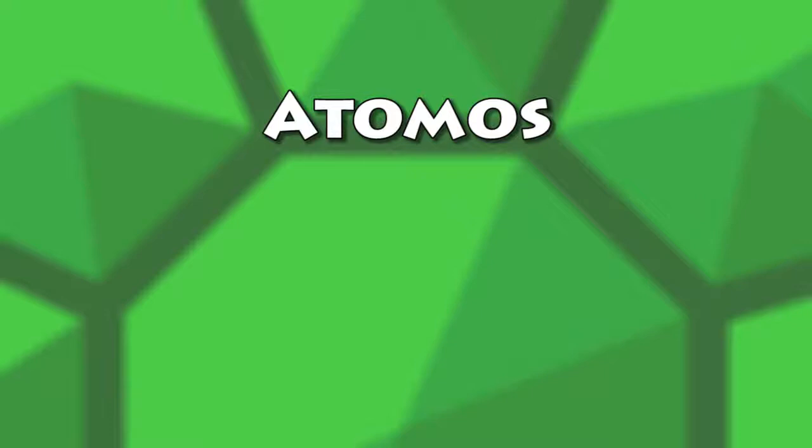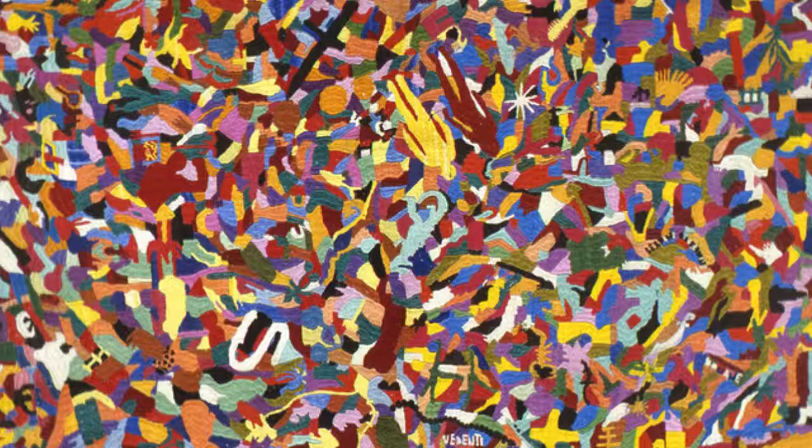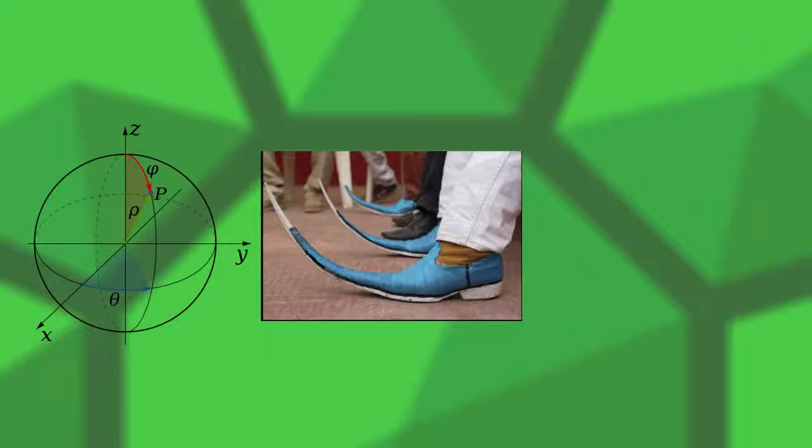He later came to the conclusion that everything was made of atomos and that it came in many different shapes and sizes. For example, liquids were very spherical, solids were spiky, and oil was made of a very smooth and fine atomos.